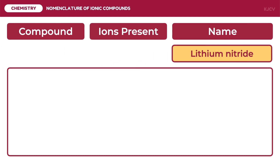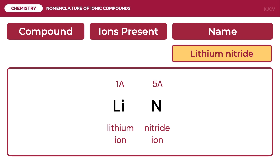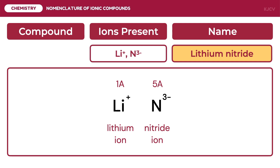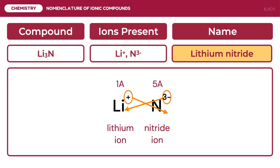For the second example, we are going to write the formula for lithium nitride. We first need to identify the ions present: lithium ion and nitride ion. To identify their charges, we use their group numbers. Lithium is in group 1A and nitrogen is in group 5A. Thus, their charges are positive 1 and negative 3 respectively. To determine the formula, we do a criss-cross of charges. The positive 1 charge of lithium will be the subscript of the nitride ion, and the negative 3 charge of the nitride ion will be the subscript of the lithium ion. Thus, we have Li₃N.